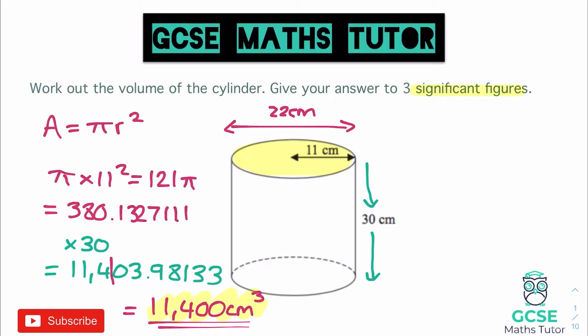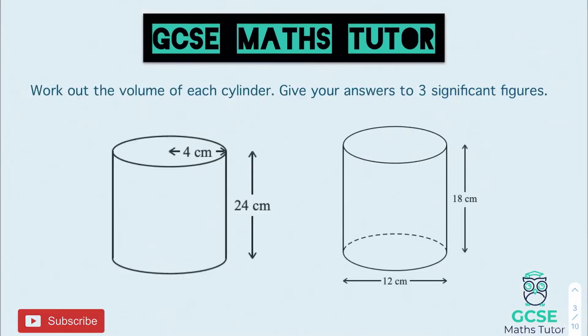Hopefully nice and easy — it links in very nicely with the volume of prisms. We just work out the area of the cross-section, which in this case is a circle, and then multiply that by the height. So obviously there is your example, and here are two questions for you to have a go at. Pause the video, have a go at these, and we'll go over the answers in a sec.